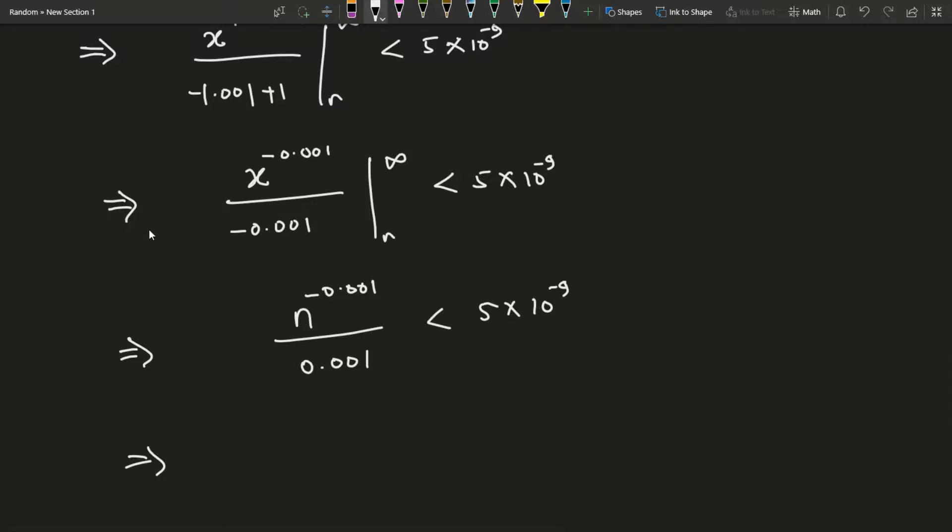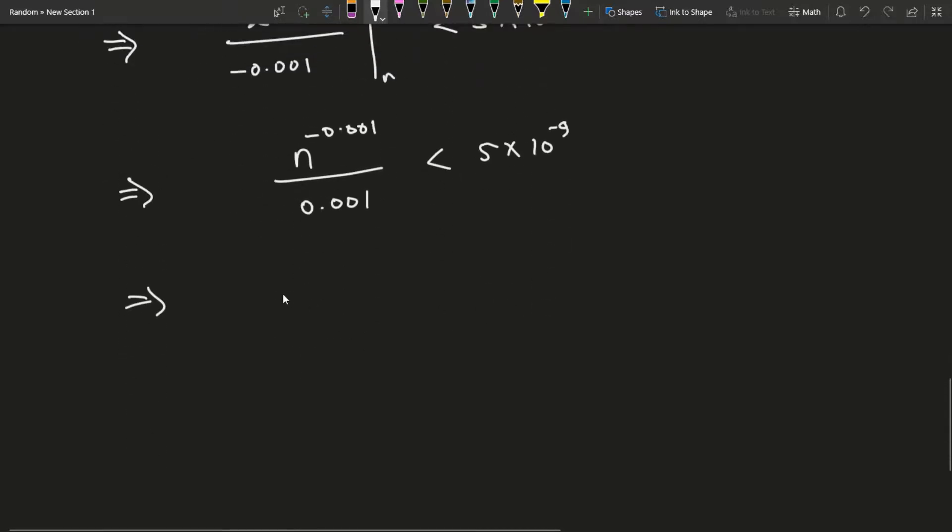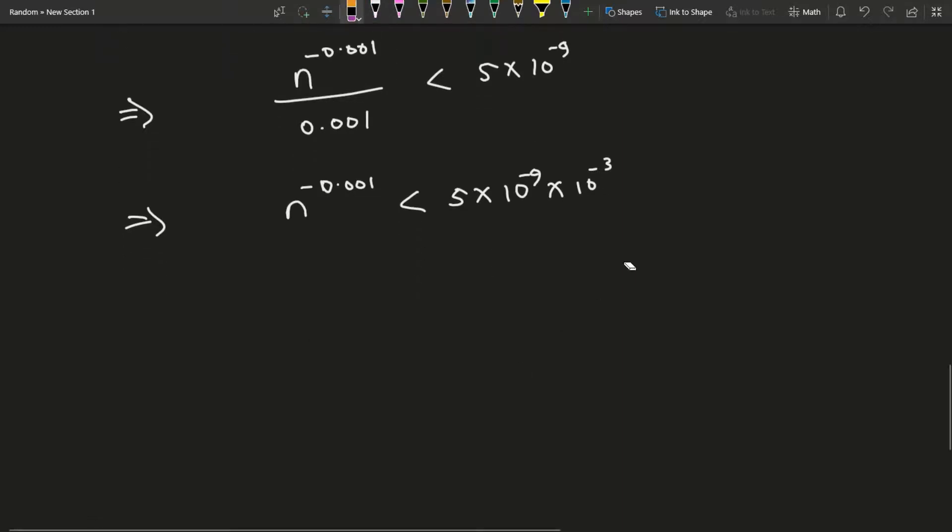So n to the negative 0.001 is less than, using this to multiply through, we have 5 times, and this 0.001 is the same as 10 to the negative 3, so this is 1 over n. Converting this to 10 to the negative 3, this becomes less than or equal to negative 12.